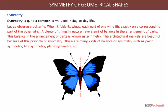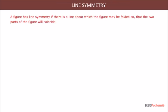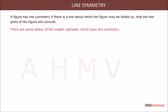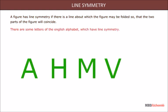There are many kinds of balance or symmetry, such as point symmetry, line symmetry, plane symmetry, etc. A figure has line symmetry if there is a line about which the figure may be folded so that the two parts of the figure will coincide. There are some letters of the English alphabet which have line symmetry, as shown in the example.